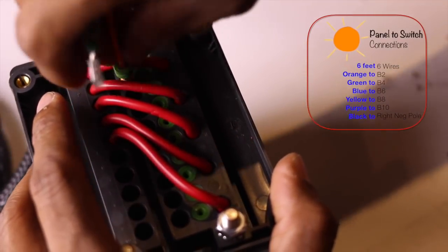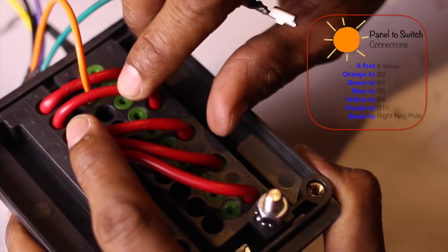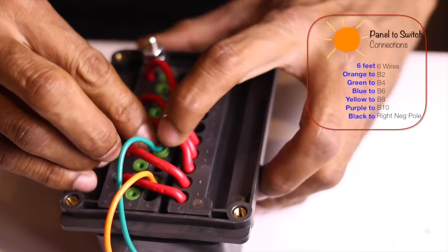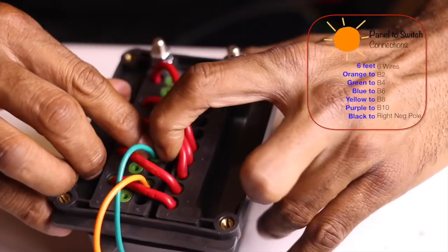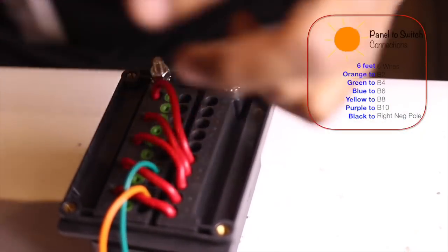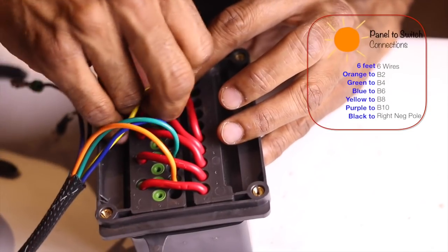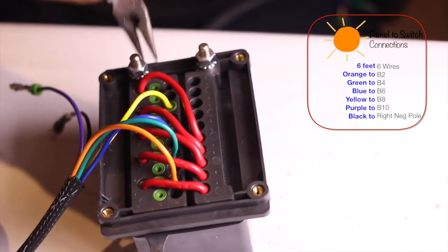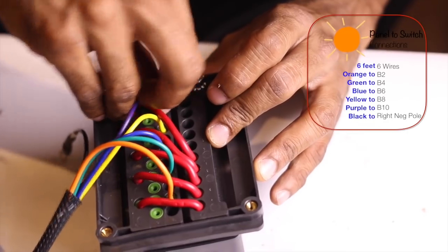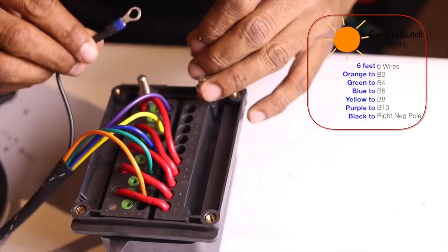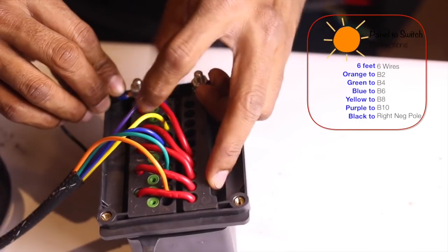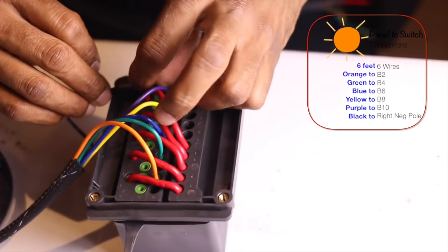Then b6 and b8 and the last one b10, and attach the black wire to the negative terminal of the relay.